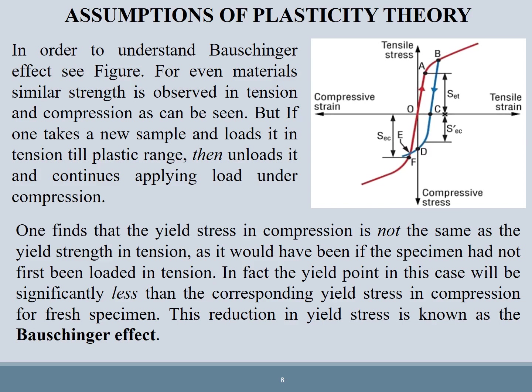In simple words: if we take a specimen and apply tensile load to yield, then unload and apply compressive load on that same deformed material, the yield strength in compression has decreased. This reduction in yield stress is known as the Bauschinger effect.